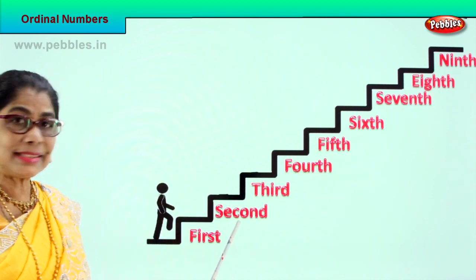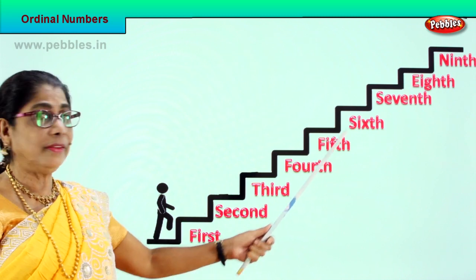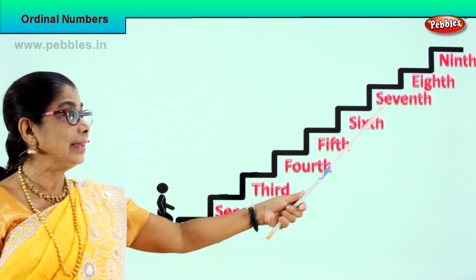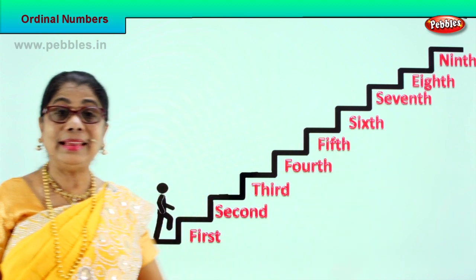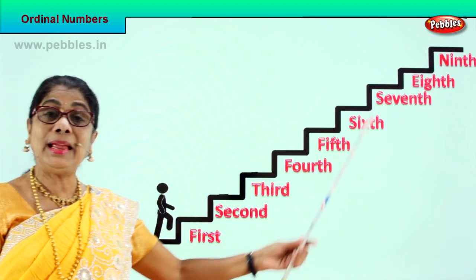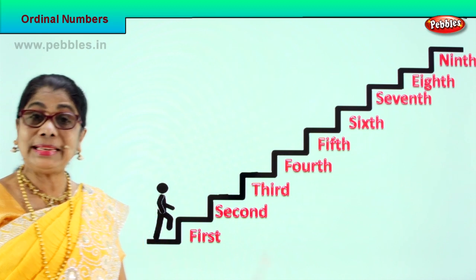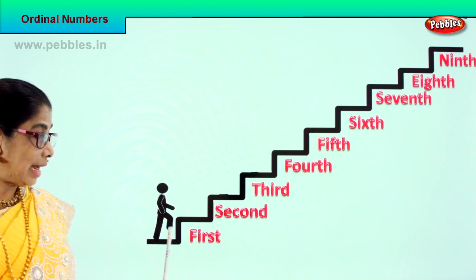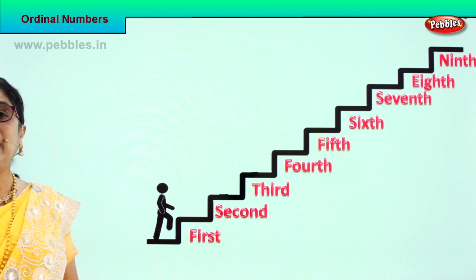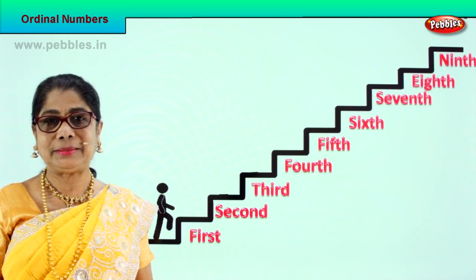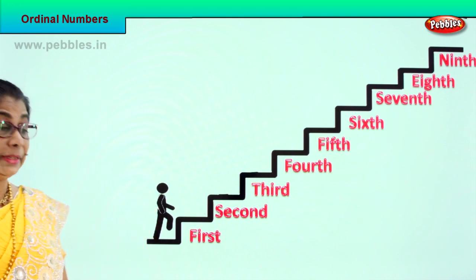So we have: first, second, third, fourth, fifth, sixth, seventh, eighth, ninth. The little child has climbed nine steps. Now he is standing on the first step. These are ordinal numbers.